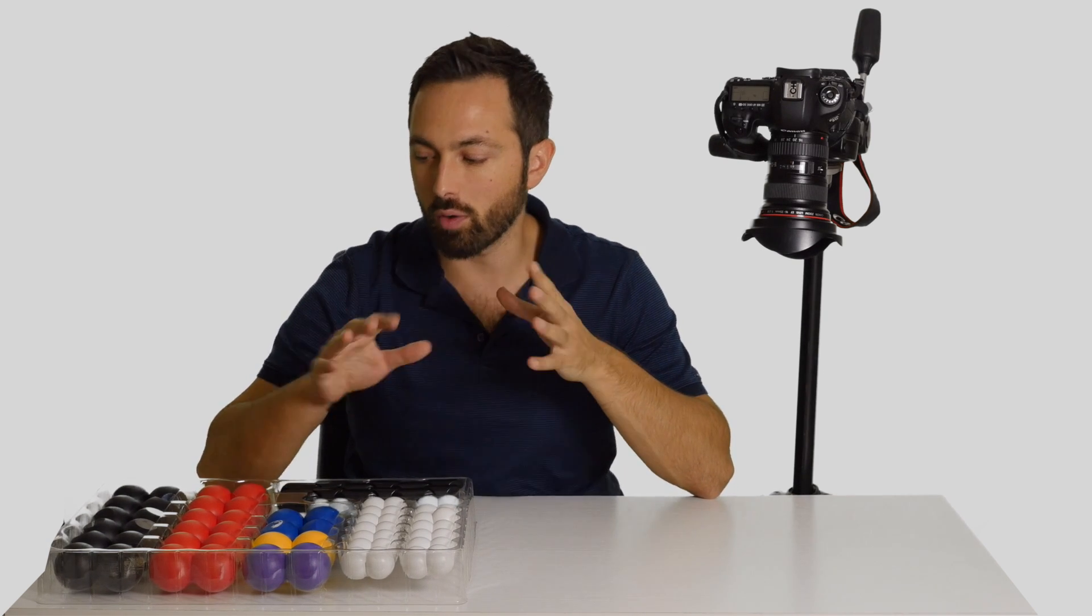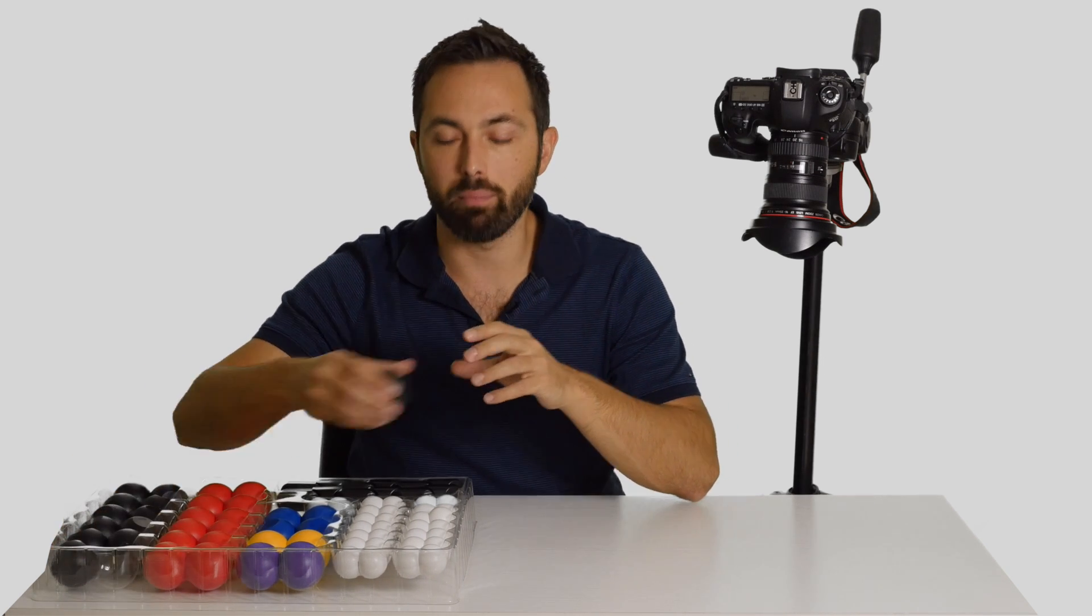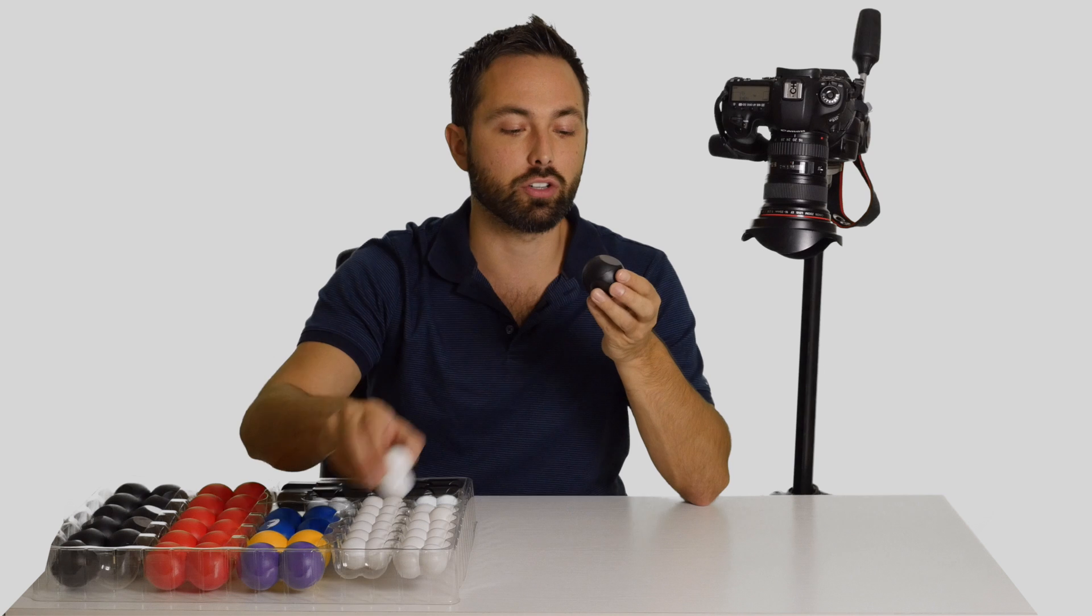Let's talk about the shapes of different molecules. Let's start with a simple symmetric molecule. So let's try methane, CH4.